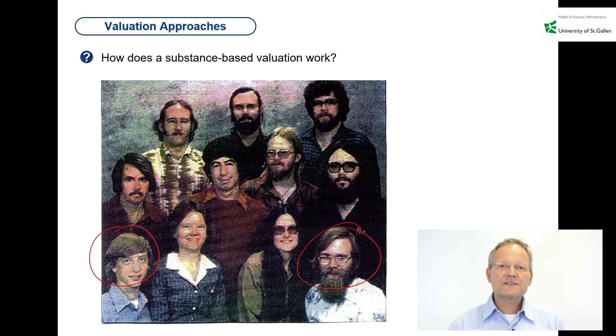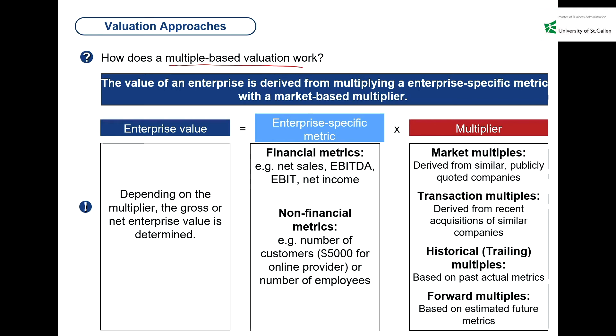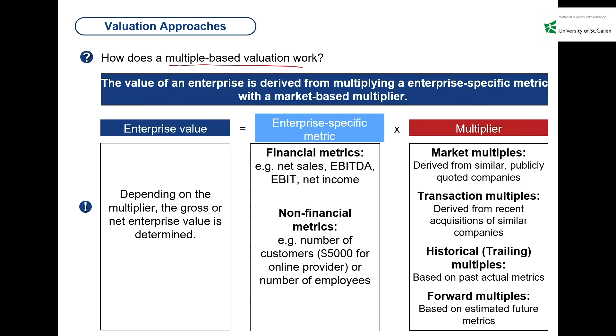That's approach number one. Approach number two is the analyst favorite — what people call a multiple-based approach. What is a multiple-based approach? It is a very simple approach. Even my nine-year-old daughter can do a valuation based on multiples — unfortunately with about as much financial know-how as a nine-year-old has, which is basically zero. However, because it is such an easy approach, analysts love it, and people love to discuss multiples in a given industry. You go in and define one magic number — this could be EBIT or EBITDA — and you ask yourself how many times this magic number is a company in this industry actually worth.